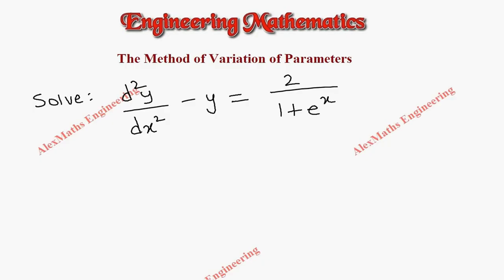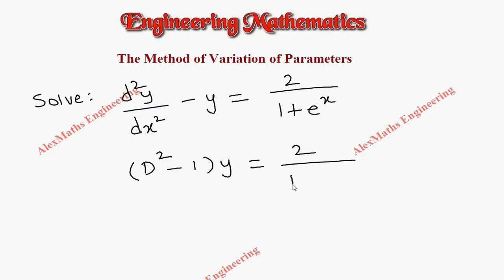Hi students, this is Alex. In this video we are going to solve the problem using the method of variation of parameters. The question is: (D² - 1)y = 2 / (1 + eˣ).